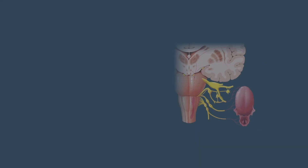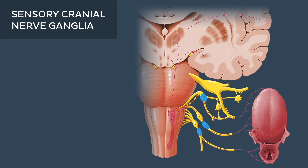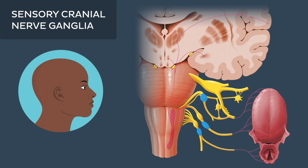The sensory cranial nerve ganglia can carry somatic, visceral, and special sensory information and transmit information from the head and neck periphery to the brain.